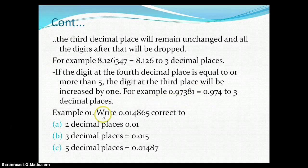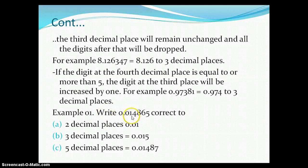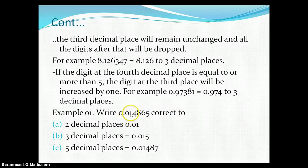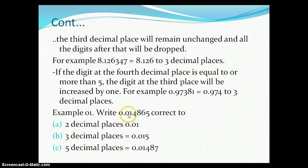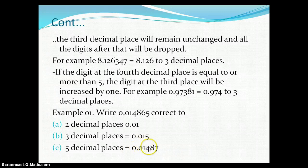Now let us work through example one: write 0.014865 to different decimal places. To two decimal places, count one, two — the digit after is four, which is less than five, so it remains 0.01. To three decimal places, count one, two, three — the digit after that is eight, so one will be added, giving 0.015. To five decimal places, count one, two, three, four, five — the digit after that is exactly five, so one will be added, giving 0.01487.